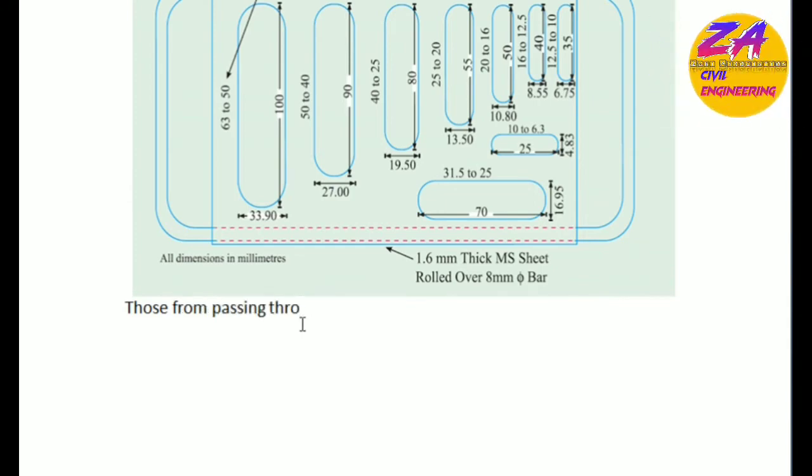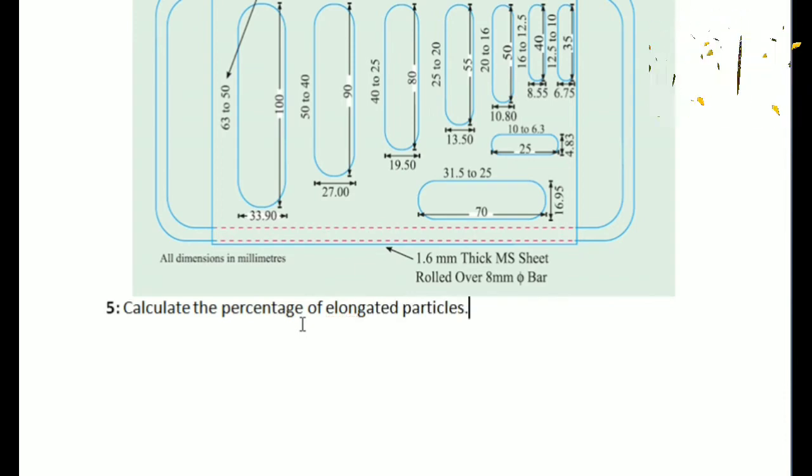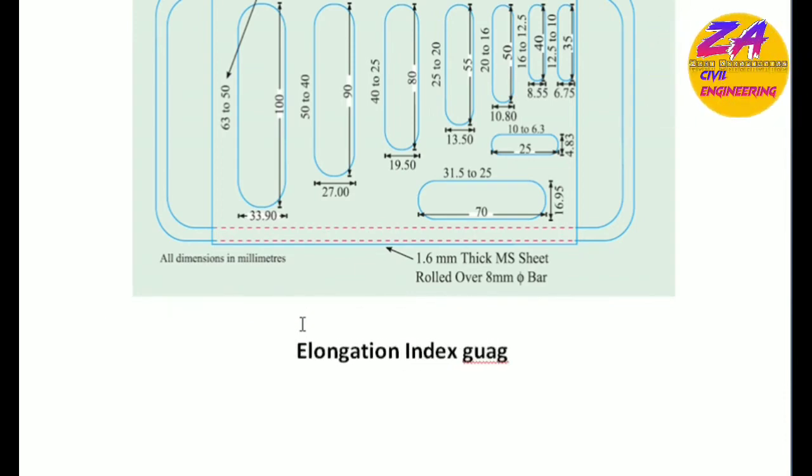Those not passing through the gauge are retained and placed one by one. The fifth step is to calculate the percentage of elongated particles using the elongation index gauge.